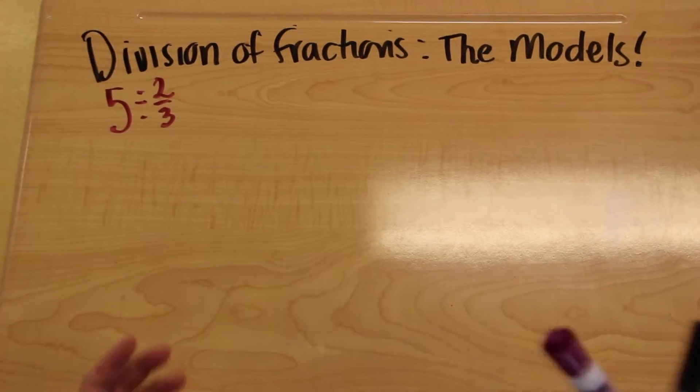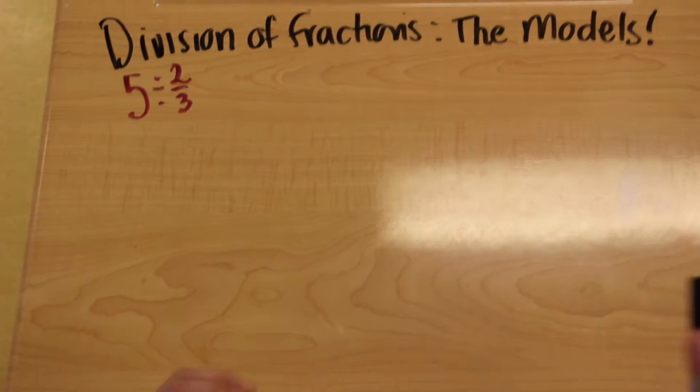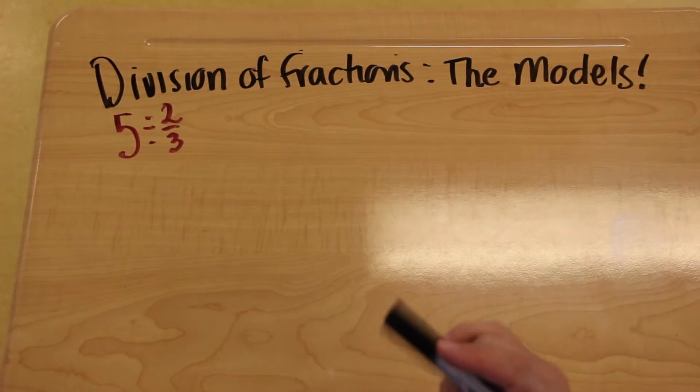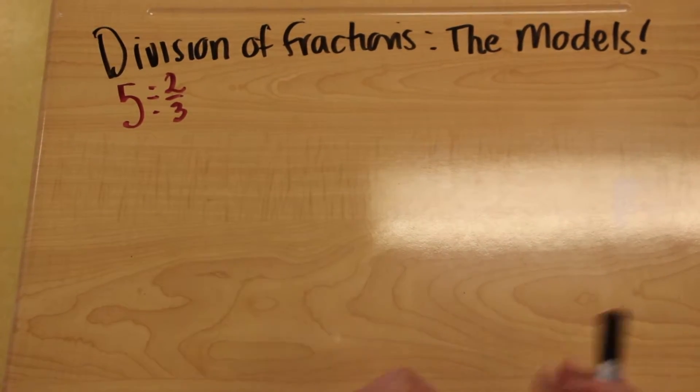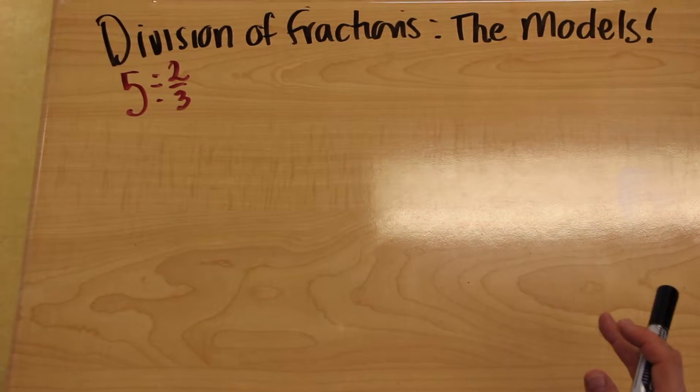Okay, so we're going to do division of fractions, the models. We're going to do two different types of models: circles or pie graphs and number lines. So we'll do examples for both of those.